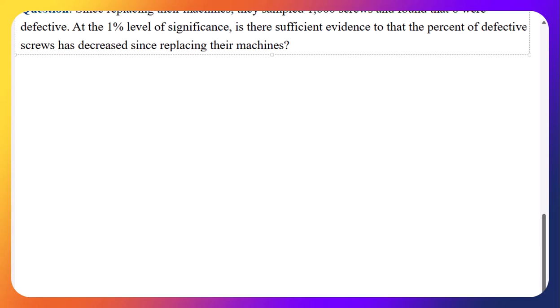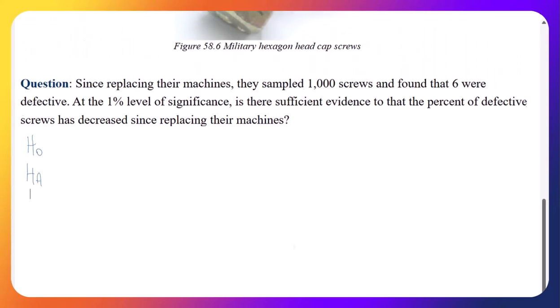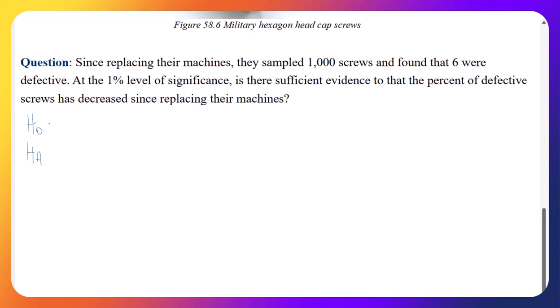Okay, so first thing we're going to need to do is define our null and our alternative hypotheses. So our null hypothesis is going to be that nothing has changed, that P is still the 1 in 125, which it originally was. So that puts us at 0.8% defective or 0.008.